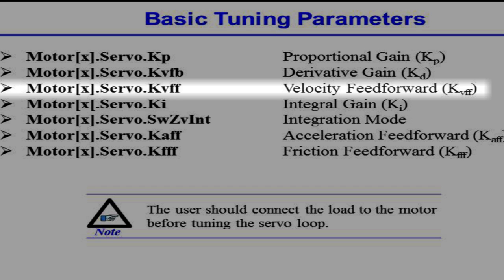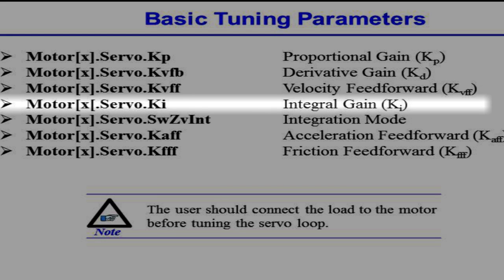Velocity feed forward, or kvff, eliminates steady state error at constant speed. Integral gain, or ki, multiplies the sum of following error over time. Theoretically, this gain guarantees zero steady state error, so it is used to ensure that the motor eventually reaches the commanded position as time goes to infinity. It is also used to compensate for body forces that are always present, such as friction and gravity. For certain types of axes, such as a vertical axis on a machine tool, this gain is completely necessary.